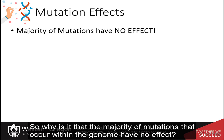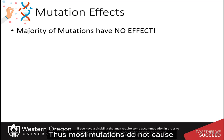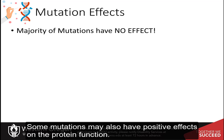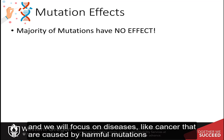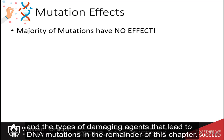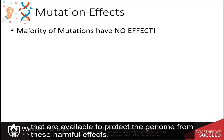So why is it that the majority of mutations that occur within the genome have no effect? Recall, the actual gene sequence only makes up a small percentage of the human genome. Thus, most mutations do not cause any deleterious effects to the organism. Some mutations may also have positive effects on protein function. However, we do see cases where mutations have a harmful effect, and we will focus on diseases like cancer that are caused by harmful mutations, and the types of damaging agents that lead to DNA mutations in the remainder of this chapter. We will also learn the many processes of DNA repair that are available to protect the genome from these harmful effects.